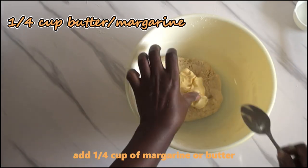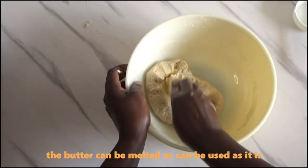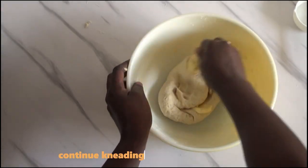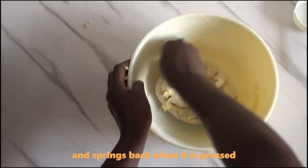Add a quarter cup of margarine or butter. The butter can be melted or can be used as is. Continue kneading until the dough is soft and springs back when it is pressed.